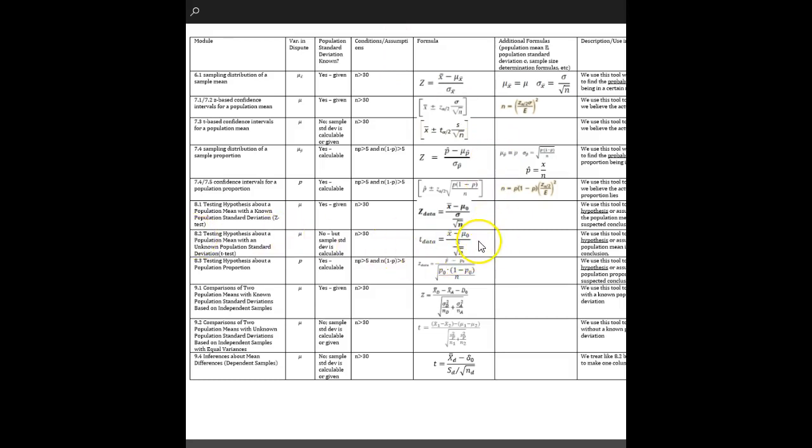t-calc, or t-calc, is equal to x-bar minus mu-naught divided by s over the square root of n.